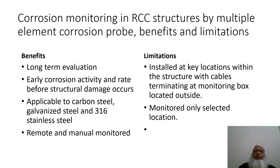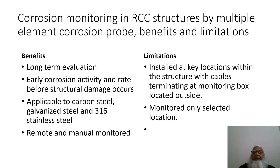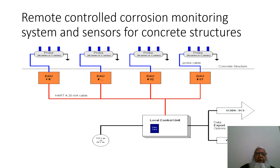Benefits of the multi-element corrosion probe in RCC structures: used for long-term evaluation; enables early detection of corrosion activity and rate before structural damage occurs; applicable to carbon steel, galvanized steel, and 316 stainless steel; remote and manual monitoring. Limitations: installed at key locations within the structure with cables terminating at a monitoring box outside; monitors only selected locations. The final slide shows how the remote-controlled corrosion monitoring system and sensors are installed for concrete structures.